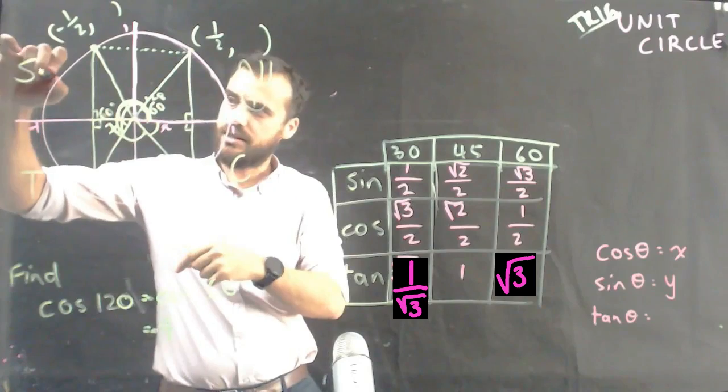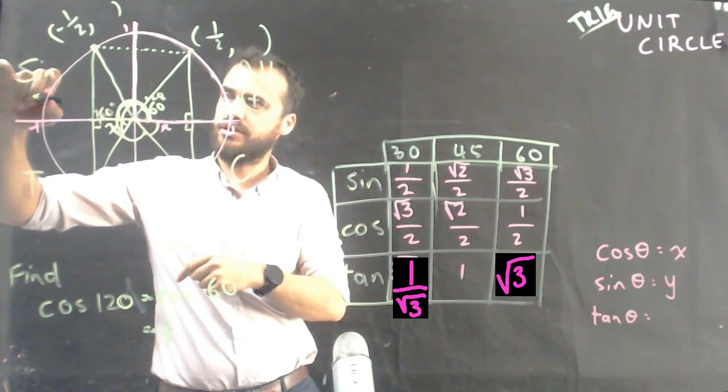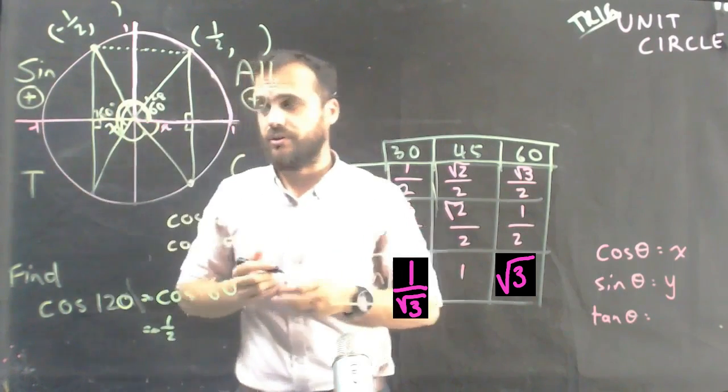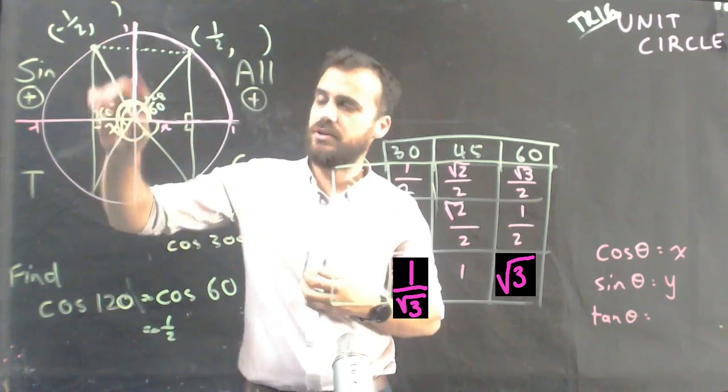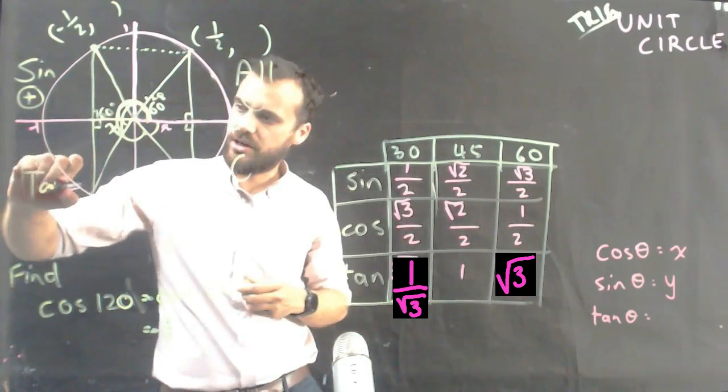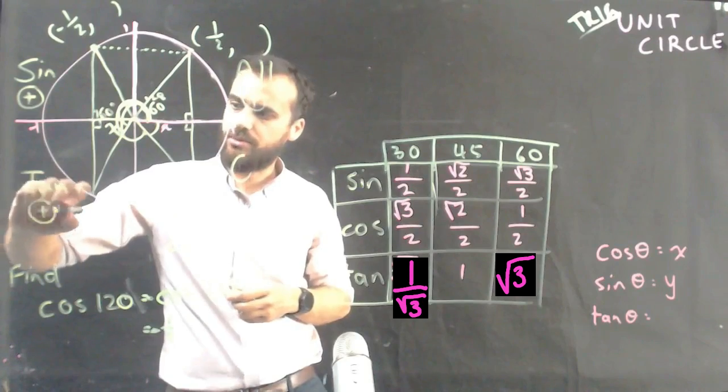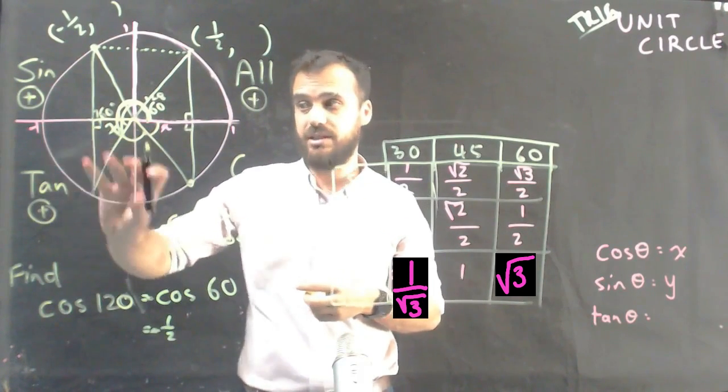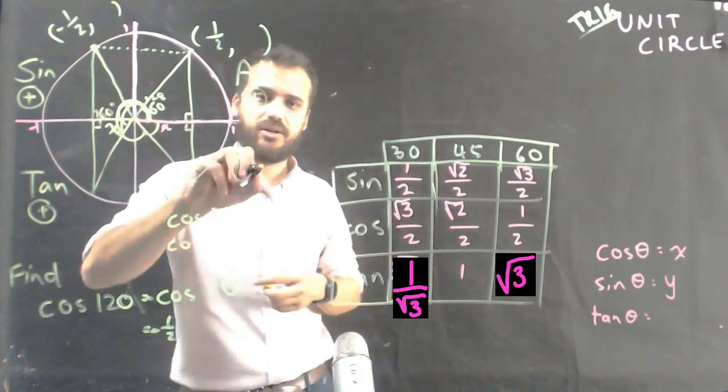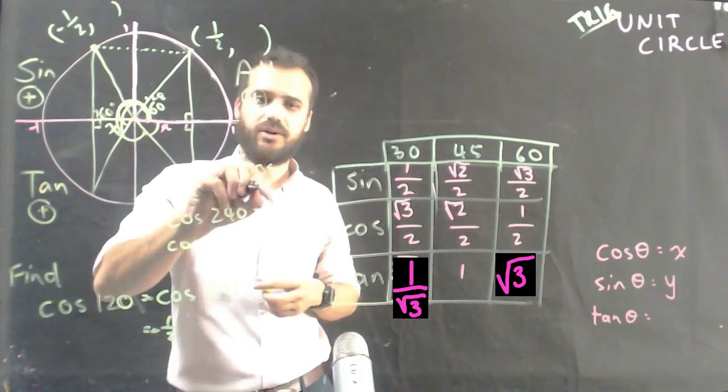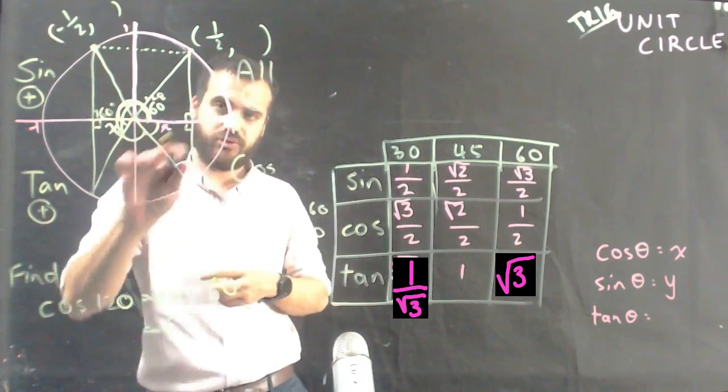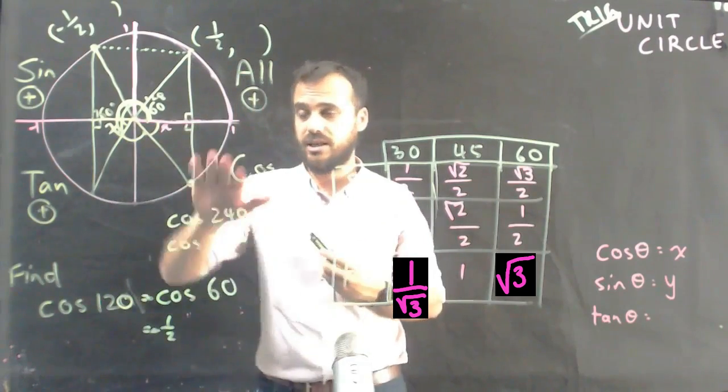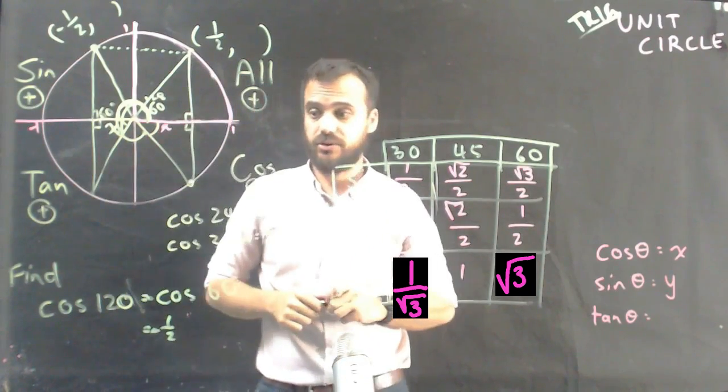What it says is that sine ratios and only sine ratios are going to be positive if they're in this quadrant. Tan ratios are going to be positive in this quadrant, which means sine and cosine ratios are negative in this quadrant. And cosine ratios are going to be positive in this quadrant, which means that sine and tan ratios are going to be negative in that quadrant.